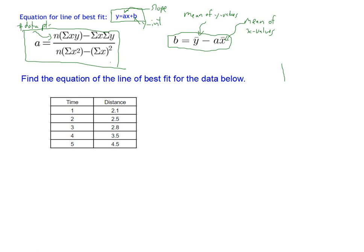We're going to find the equation of the line of best fit for a time-and-distance dataset. Time is the independent variable and distance is the dependent variable. In the formula, sigma means 'the sum of,' so we need: the sum of xy products, the sum of x's, the sum of y's, n (number of data points), and the sum of x-squared values. Be careful: summing the x's then squaring is different from squaring each x then summing. We need a couple of extra columns in our table for x² and xy.